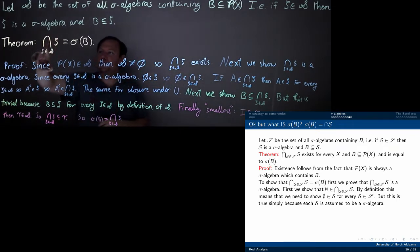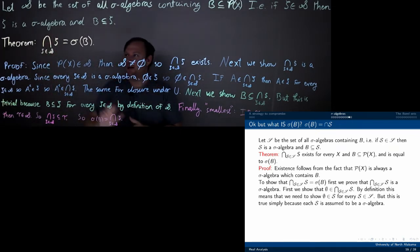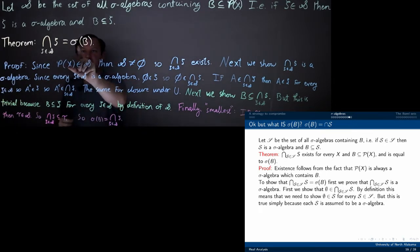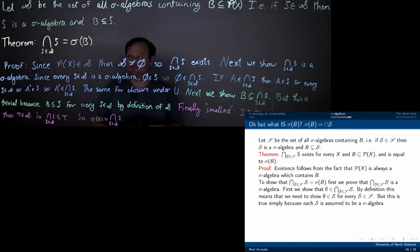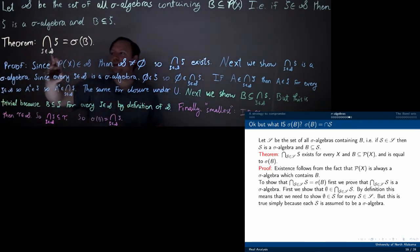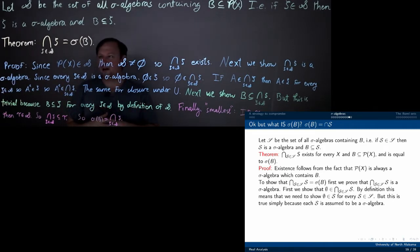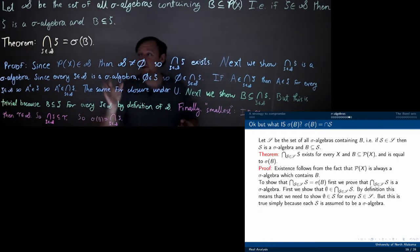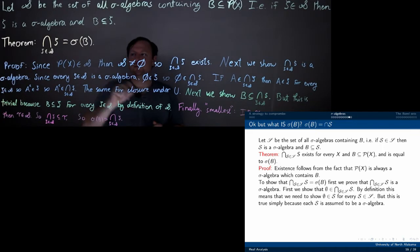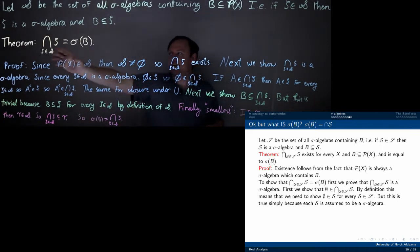We're intersecting over all of the sigma algebras that are in cursive S — that's what this thing is. We'll claim that it is the smallest sigma algebra containing B. First, to show that it exists, we just need to know that the indexing set contains at least one element. Indeed, the power set is always a sigma algebra and it contains every subset, so it definitely contains B. So it must be in cursive S, and this intersection exists — it's well-defined.